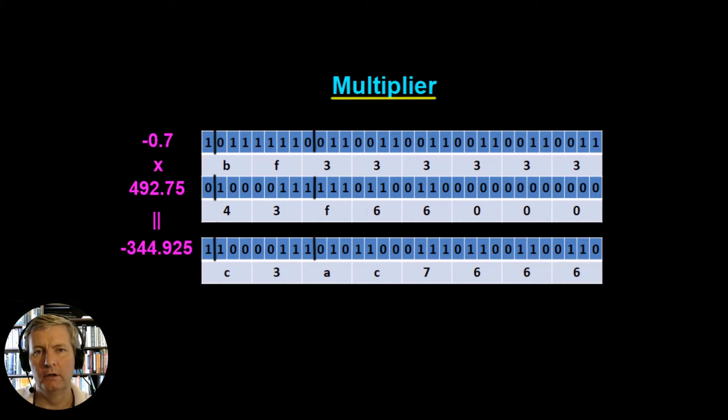Let's get started building our multiplier. We're going to multiply together the two numbers that we've already used in a previous video when we looked at multiplication. We're going to multiply -0.7 times 492.75, and the answer to that should be -344.925. I suggest you stick those numbers into a calculator and convince yourself that that is actually true.